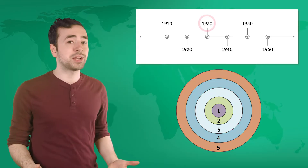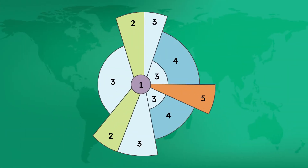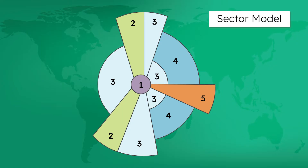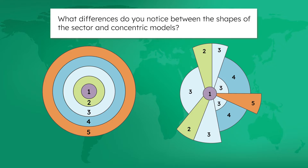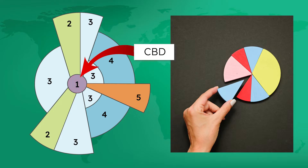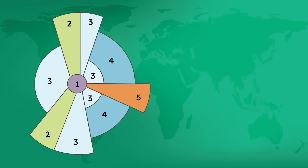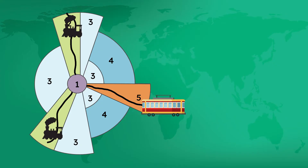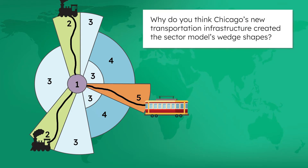As Chicago continued to grow and change in the 1930s, urban geographers noticed that the concentric model didn't really explain Chicago's structure well anymore. Based on new observations, urban geographers developed a new urban model to explain Chicago's growth: the sector model. Both models still have Chicago's Loop as the main CBD in the center, but instead of concentric circles, the sector model organizes land use in wedges, like pieces of a pie chart. A key reason the shape changed is because the city developed new transportation infrastructure like railroads and streetcars, and the routes of these public transit options run along the sector model's wedges.